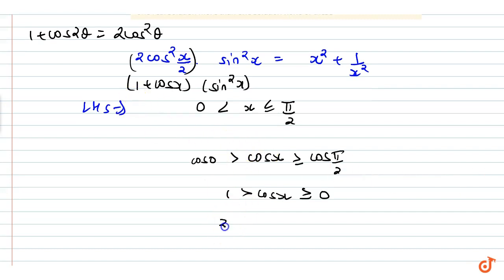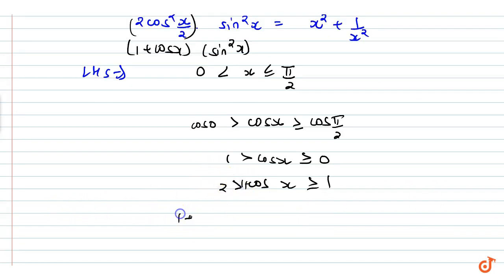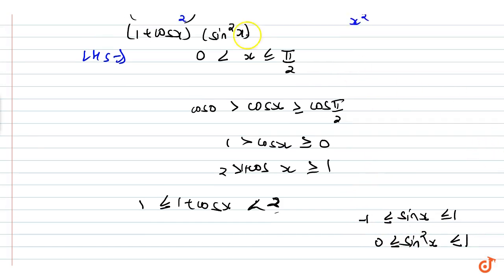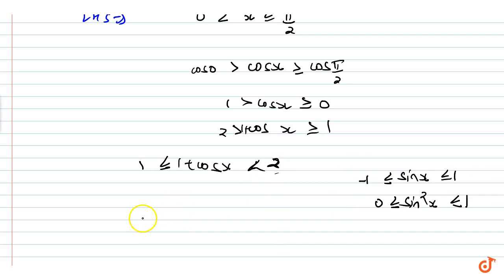So (1 + cosx) varies from 1 to 2, but 2 cannot be achieved. Now sin²x varies from 0 to 1, since sin x varies from −1 to 1, and squaring makes it always non-negative with a minimum of 0. Multiplying both factors, the LHS (1 + cosx)·sin²x varies from 0 to 2.